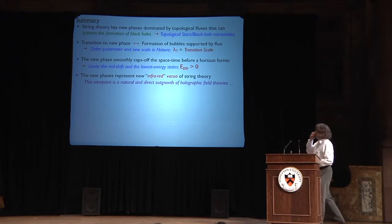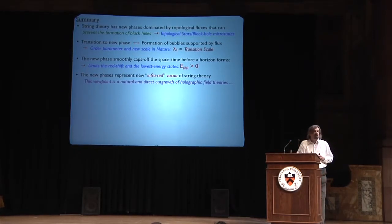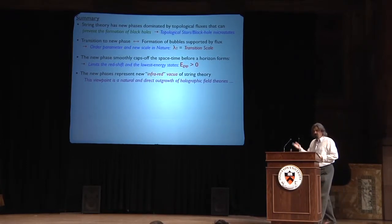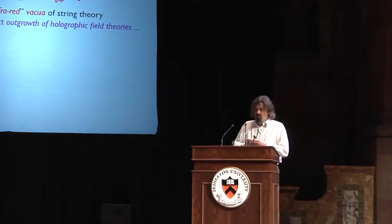Okay, so let me get to my conclusions. So, important point is string theory has new phases, and you should think of them as new phases, that are dominated by topological fluxes that prevent the formation of black holes. And as I said, it's a win-win situation. Either string theory has new kinds of stars, or you should really think of these things as characterizing microstates of black holes. The transition to the new phase involves the formation of bubbles supported by fluxes. And the fluxes are the order parameters of the new phase, and there is a new scale associated with that, which is not necessarily the Planck scale. Similarly, because you're cutting off the throat of the black hole, or the black hole before it forms a horizon, actually rounding it out with geometry, you now have a gap which is non-zero. Or if you like, there's a limit to the redshift of stuff that falls in. And this is also classically a free parameter, although in BPS we can compute it. The new phases you should really, I think, think of as infrared vacua. And there's a natural correspondence with our experience of holographic field theory.